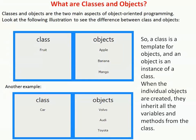Basically, an object in Java is the physical as well as a logical entity, whereas a class in Java is a logical entity only.